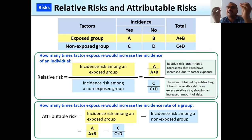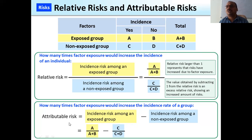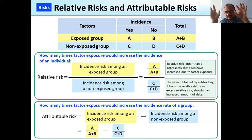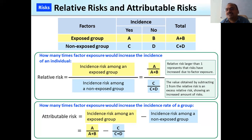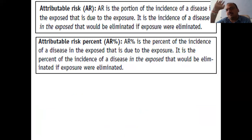Relative risk larger than one means risk has increased due to the exposure. Attributable risk is the incidence risk among the exposed group minus the incidence risk among the non-exposed group. The difference: in relative risk you divide, in attributable risk you subtract. The formula is (A ÷ (A+B)) minus (C ÷ (C+D)).